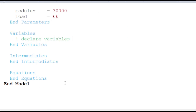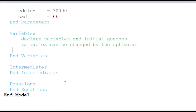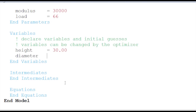Now I'm going to declare some variables of interest for this optimization problem — these can be changed by the optimizer to satisfy equation residuals or minimize an objective function. So height of 30 and diameter of 3. I'm going to put on some constraints: a lower bound of 10 and upper bound of 50 for height, and for diameter a lower bound of 1 and upper bound of 4.